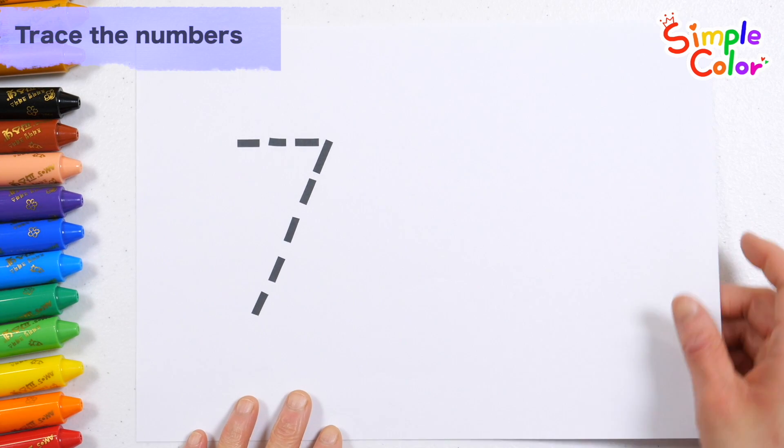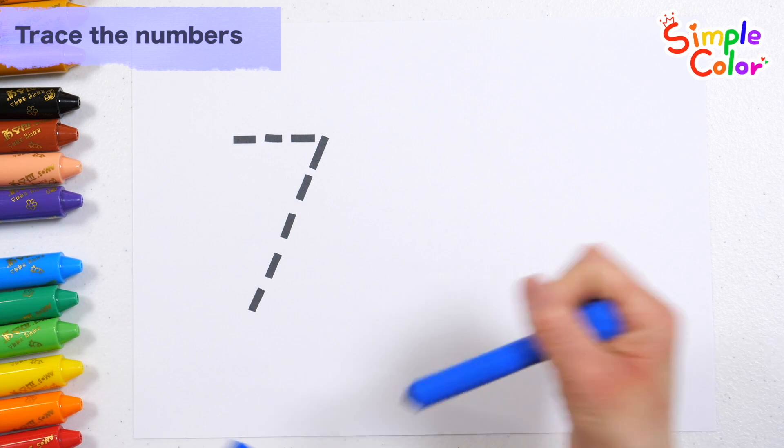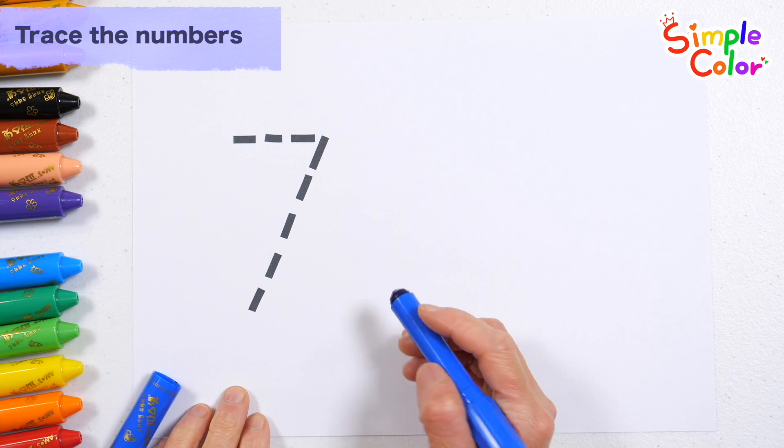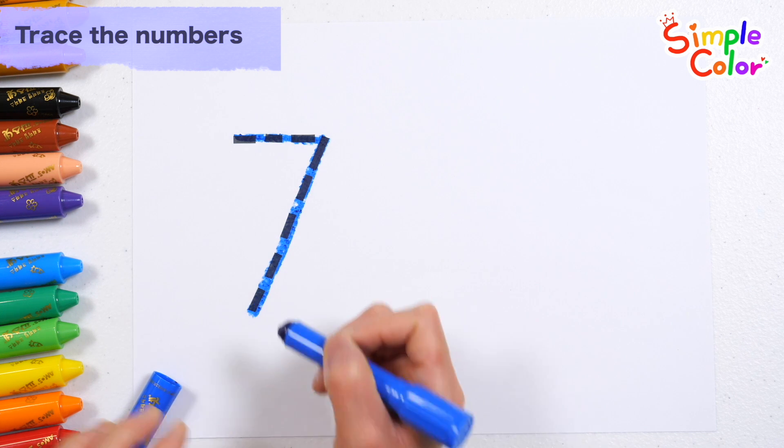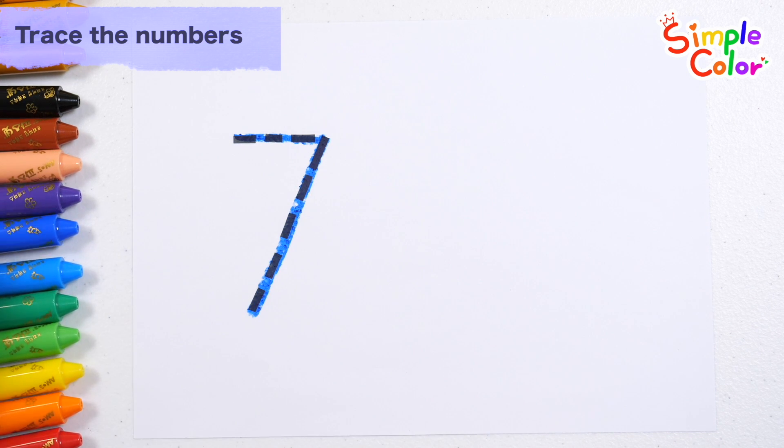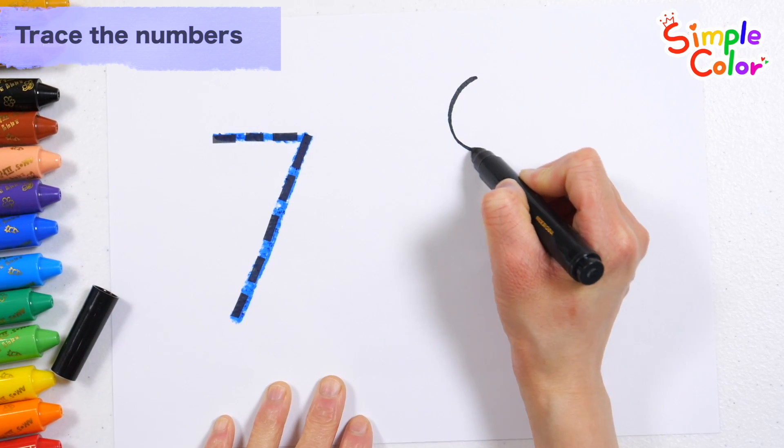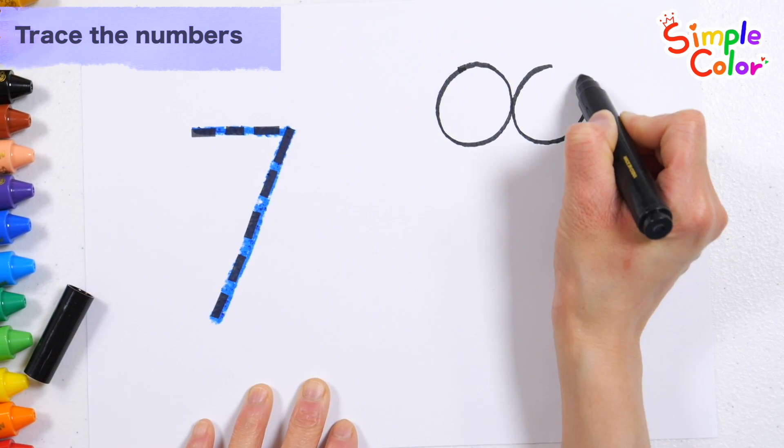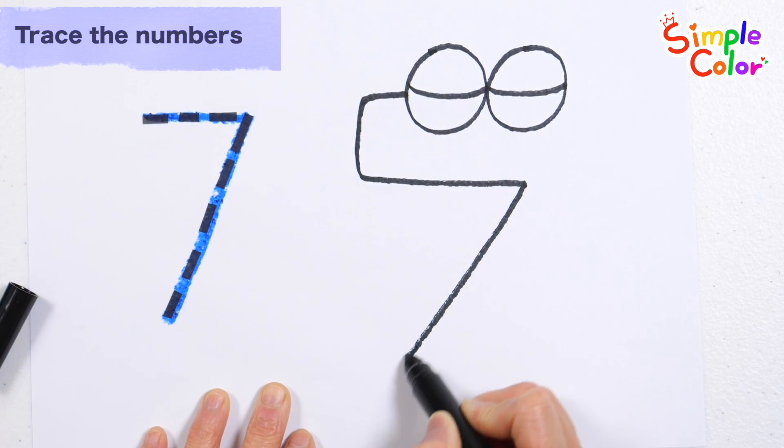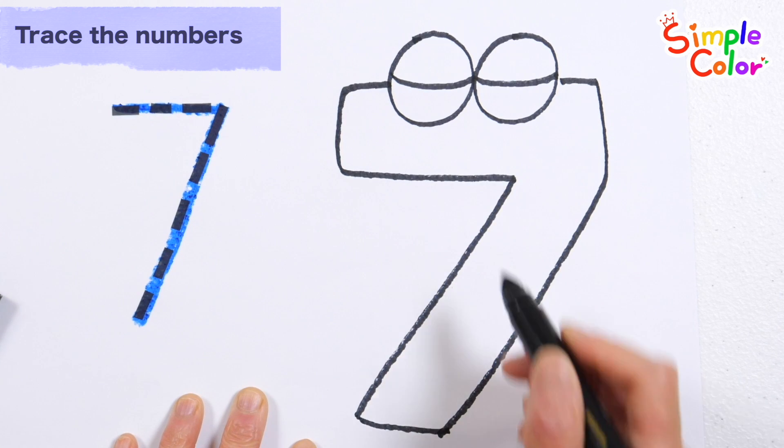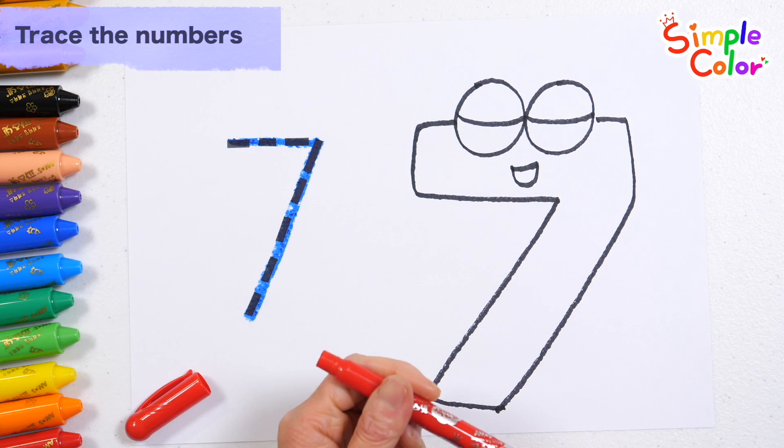Let's write the numbers along the dotted lines. S-T-U-V-W-X-Y-N-Z. Seven. Let's have fun drawing the number 7 on the right. A-B-C-D-E-F-G-H-I-J-K-L-M-N-O-V. Let's color it.